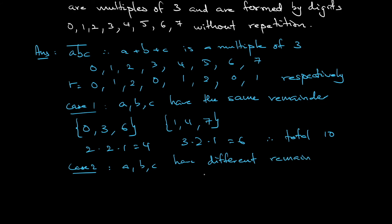What I mean by this is let's say a remainder 0, b remainder 1, c remainder 2, add together 0 plus 1 plus 2, divisible by 3. So it can be 0, 1, 2; 1, 2, 0; and then 2, 0, 1.